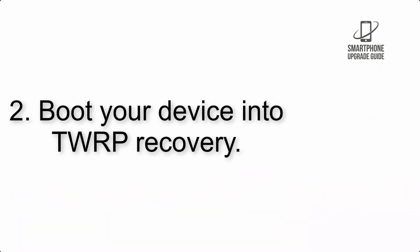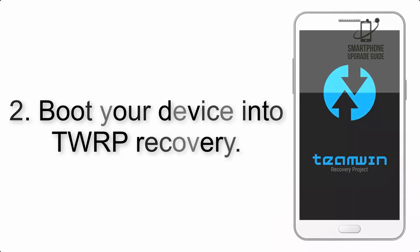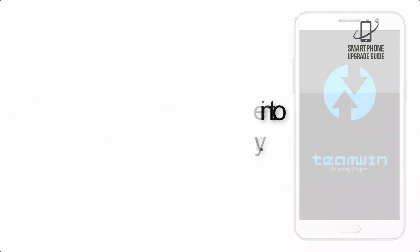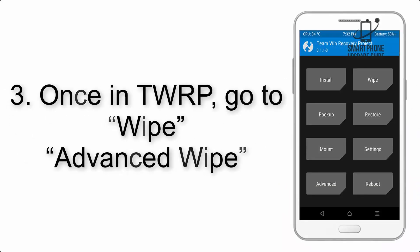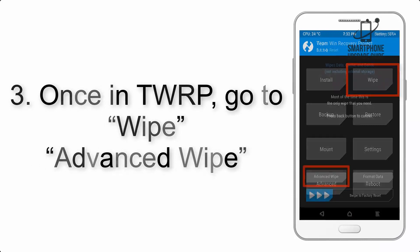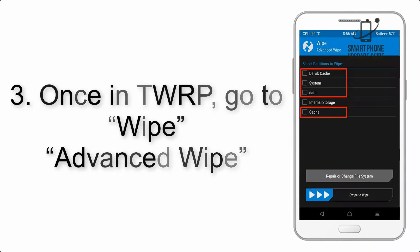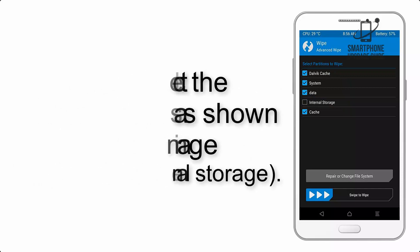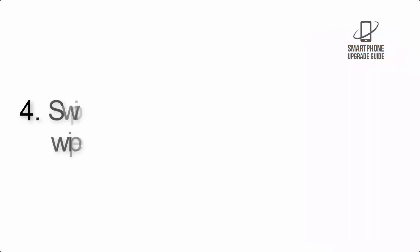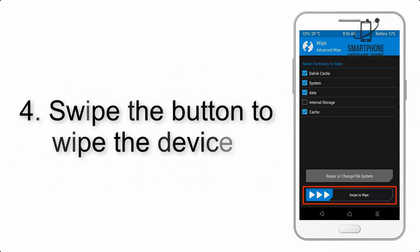Step 2: Boot your device into TWRP recovery. Once in TWRP, click on Wipe, then Advanced Wipe, and select the checkboxes as shown in the image, excluding internal storage. Step 4: Swipe the button to wipe the device.